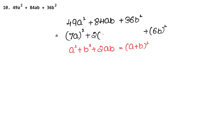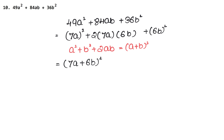Now 2ab: here a is 7a and b is 6b. Let's multiply: 2 × 7 × 6 = 84, and we have a and b, so 84ab — that matches! So by the (a + b)² formula, the answer is (7a + 6b) whole square. Let's do the next question now.